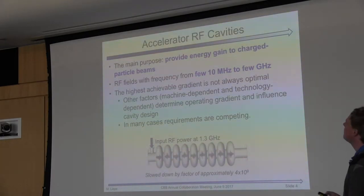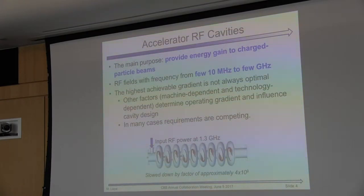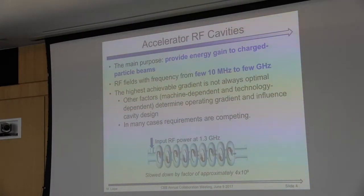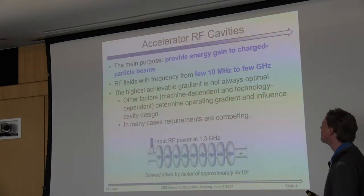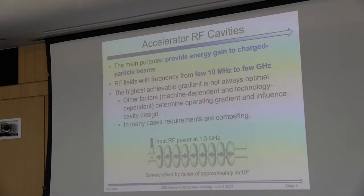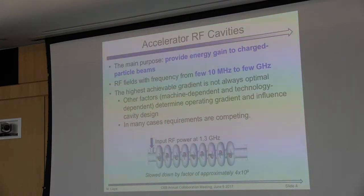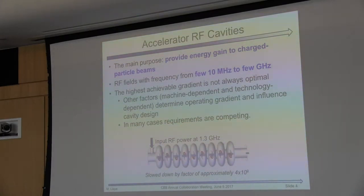The idea is always the same. Mostly these cavities are used to accelerate a beam — to provide energy to charged particles. There are other applications and I will show you some later. Typical frequencies are some megahertz to some gigahertz; that depends on the application. SRF cavities are typically around the gigahertz range, but there are low-frequency cavities too. Highest gradient is nice for some applications, but for many it's not the main goal. There are other constraints — some machine-dependent, some technology-dependent — which can shift the operating point to far lower gradients than we can achieve in principle. In most cases all the requirements are competing, so you have to pick a good operating point.